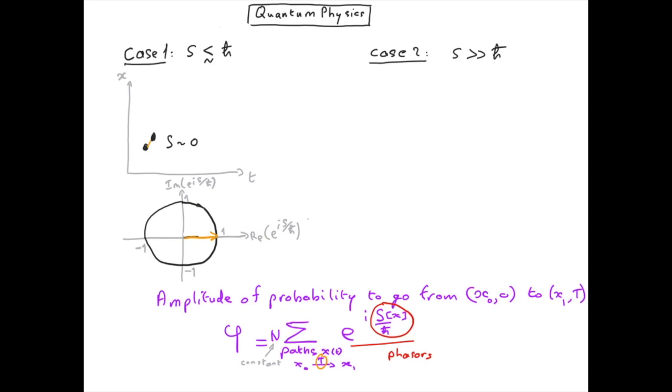Now, if we increase the time, the action will acquire a small value and the phasor will start rotating, and so on until the phasor reaches its final value. Because the action is smaller than h-bar, we see that we didn't even achieve a full rotation of the phasor in the complex plane. If we take similar paths with an action more or less of the same order, we will have similar phasors.